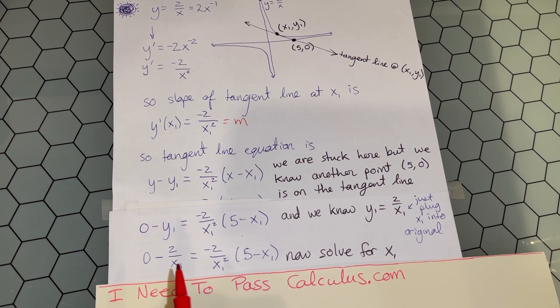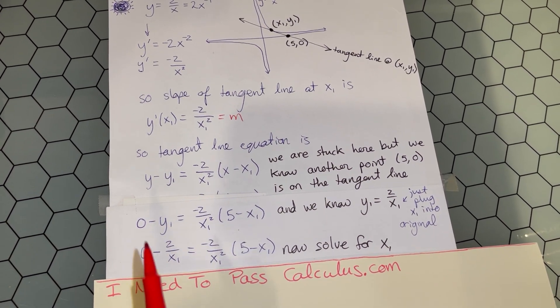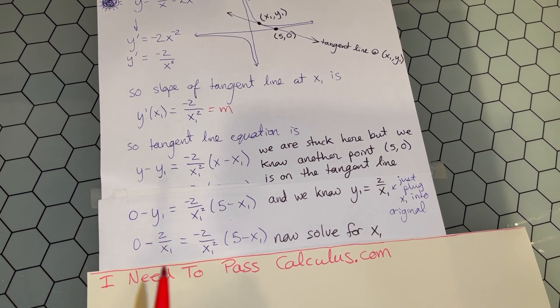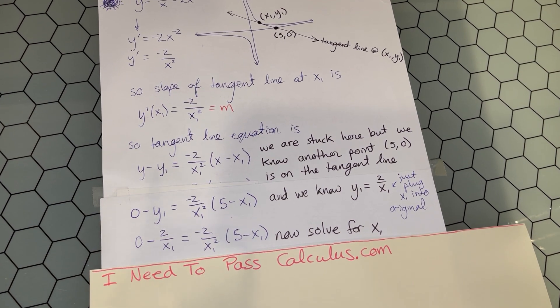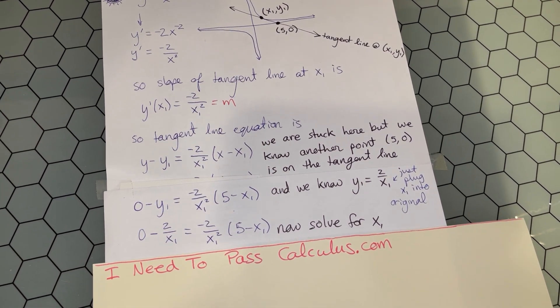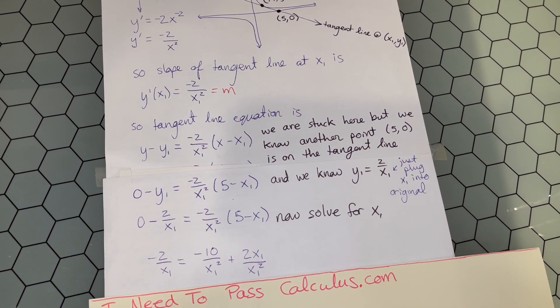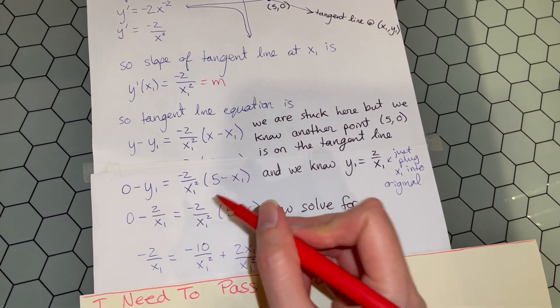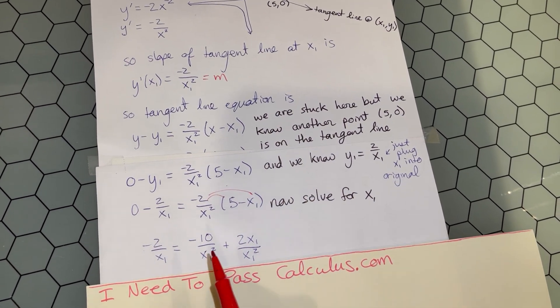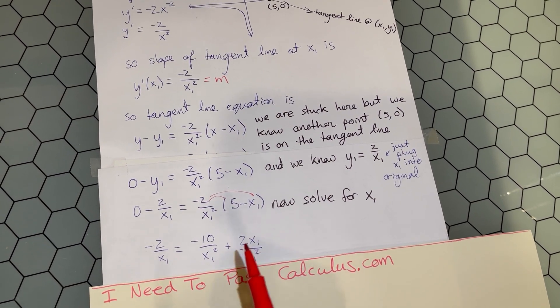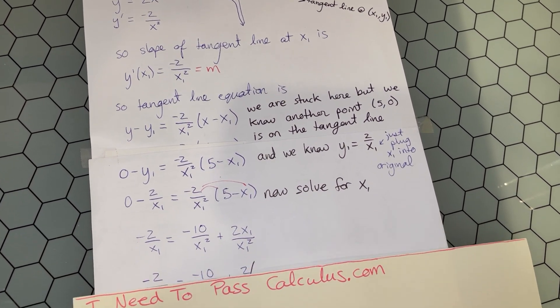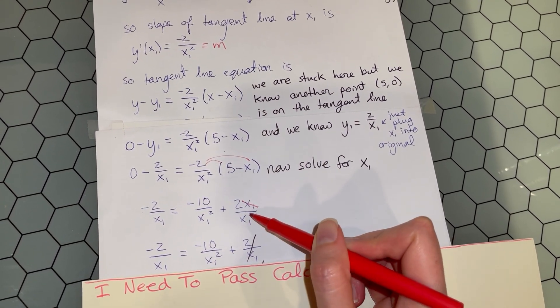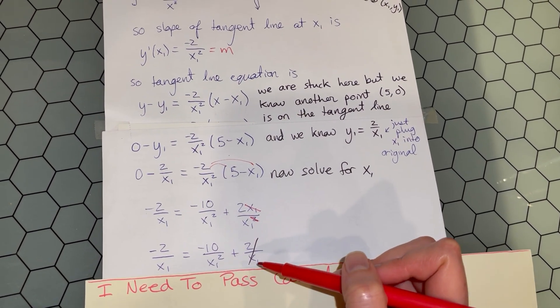Instead of y₁, we put 2/x₁. This is a fantastic point because we have one equation and one unknown. Now we can solve for x₁. The zero can disappear, and we distribute across our parentheses. We notice that x₁ top and bottom cancel in this last term.